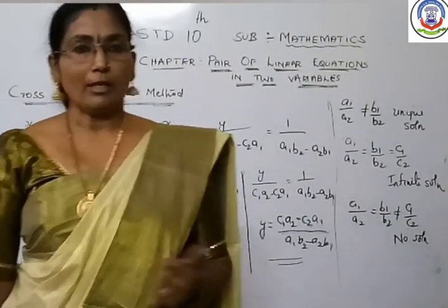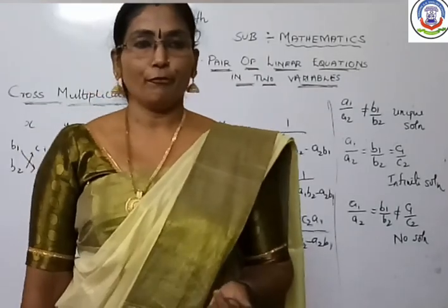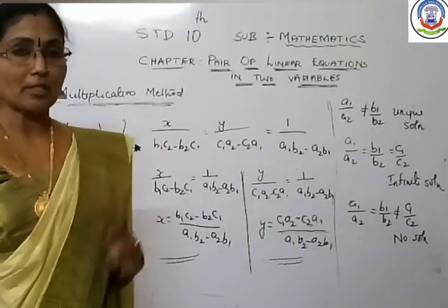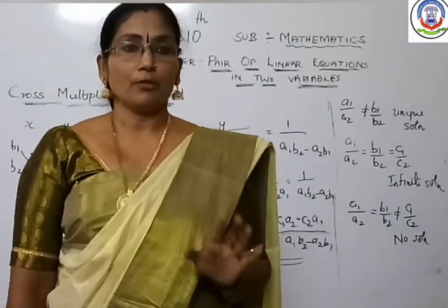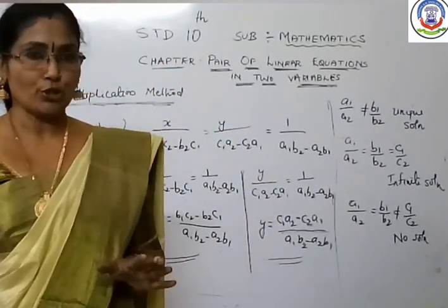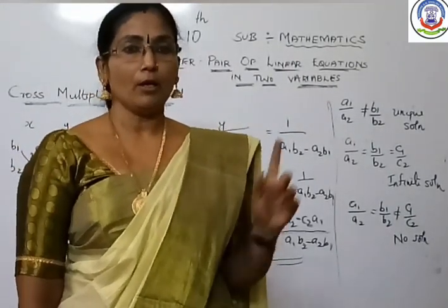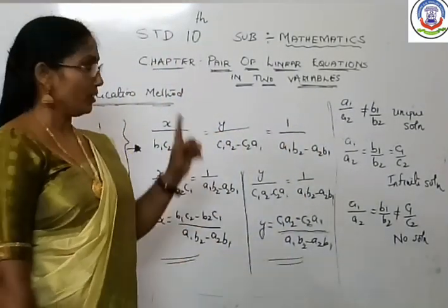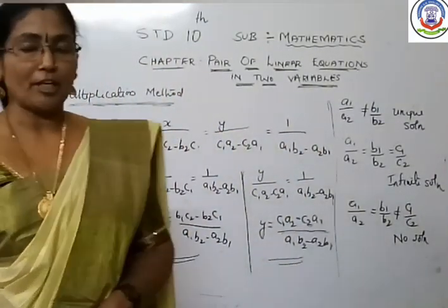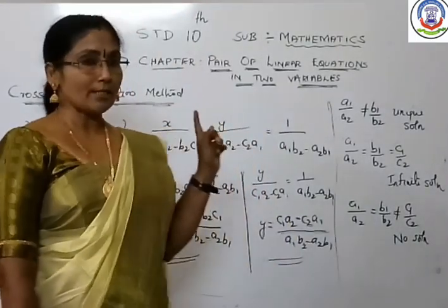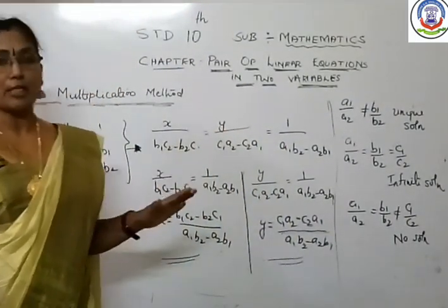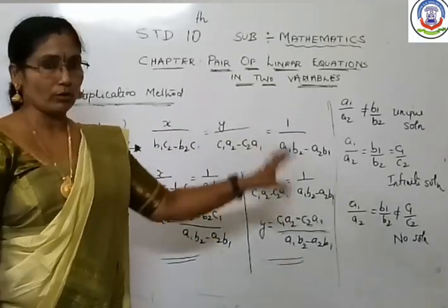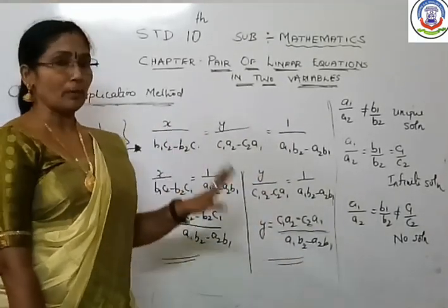Good morning children. In the last section we have done the cross multiplication method. We have already seen algebraic methods to find out the solutions — three methods: first one was substitution, second one was elimination, third one was cross multiplication method. So, about this cross multiplication method that I have explained in very detail, let us just have a glimpse on it.